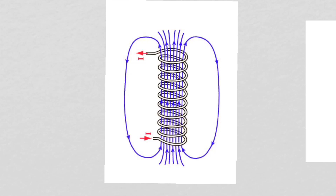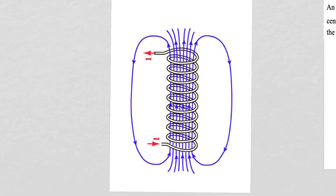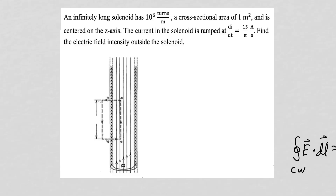We know a current produces a magnetic flux density field, and if we have a solenoid with current flowing through it, we have a very strong magnetic flux density field inside the solenoid and a very weak field outside. If we vary the current flowing through the solenoid, we will vary the magnetic flux density field being produced, and that changing magnetic flux density field will produce an electric field intensity. Let's determine the electric field intensity generated from an infinitely long, tightly bound solenoid that has 10 to the 6 turns per meter, has a cross-sectional area of 1 square meter, and we're ramping the current in the solenoid at a rate of 15 over pi amps per second.